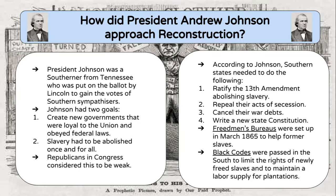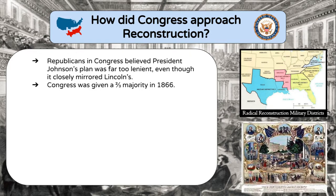Congress passed the 14th Amendment, which is an extremely important amendment in our Constitution. It bans the denial of equal protection before the law and gives citizenship to all people born in the United States — there cannot be different statuses of citizen. It was meant to give citizenship to African Americans, but what it ended up doing is giving citizenship to anyone ever born on U.S. soil. That provision is in the Constitution and has relevance even today. The 14th Amendment was passed in 1867 during the Reconstruction era.